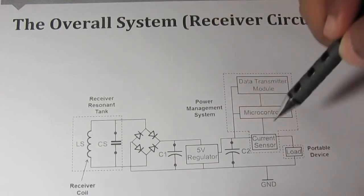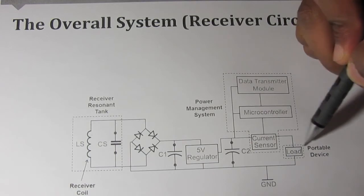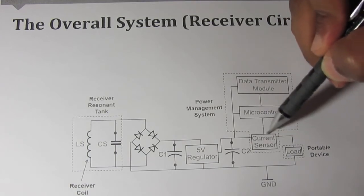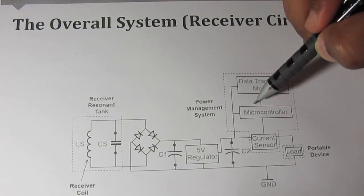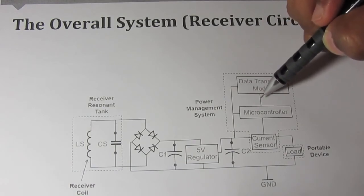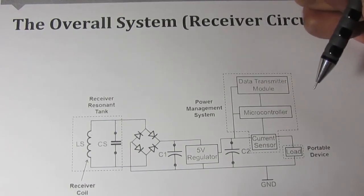The current then passes through a current sensor and then to the load. The current sensor reads the current and reports it to the microcontroller. The microcontroller sends the data to the receiver module I showed before through the data transmitter module.